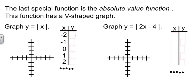So if x is negative 2, the absolute value of negative 2 is 2. If x is negative 1, the absolute value is 1. At 0, the absolute value is 0. At 1, the absolute value is 1. And at 2, the absolute value is 2.